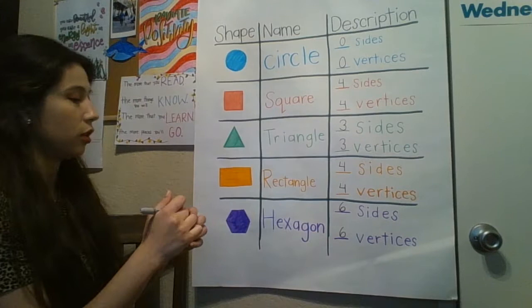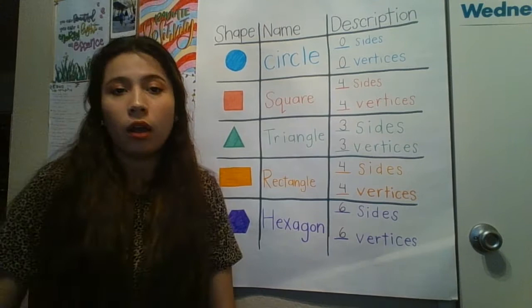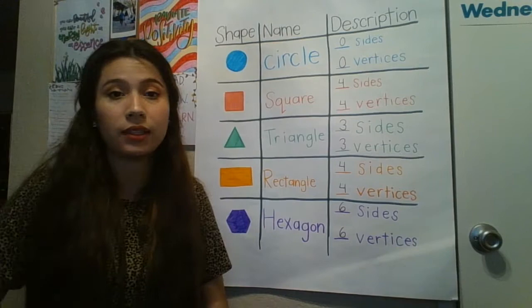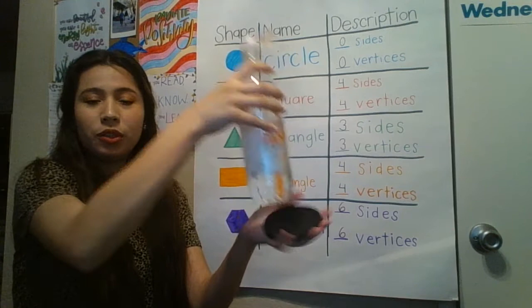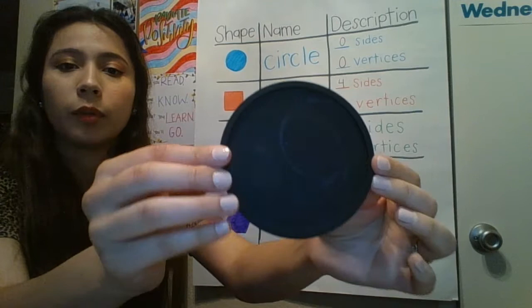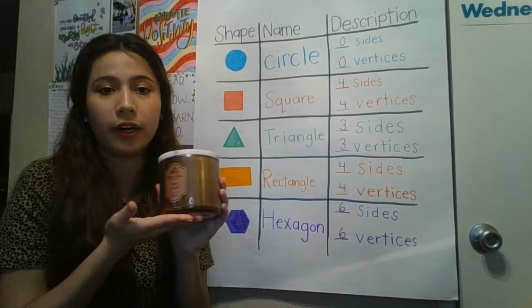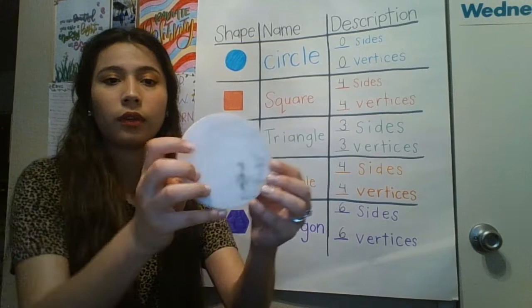I want to show you guys something really quick. I went around my apartment to see if I could find any shapes, and I did find some. For a circle, I found two things. This is called a coaster — it's where I put my drinks so my table won't get messed up. Look at it: it's a perfect circle. I also have this candle here, and the lid, if I open it, is also a perfect circle.